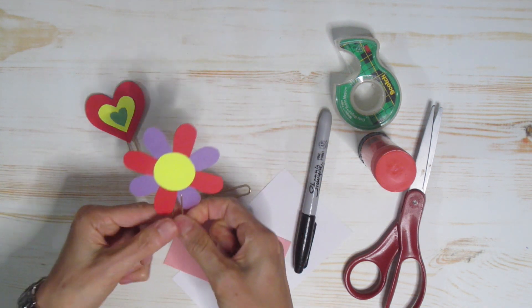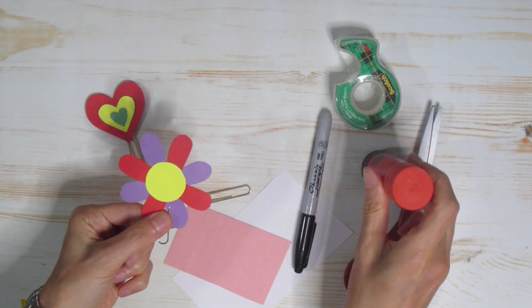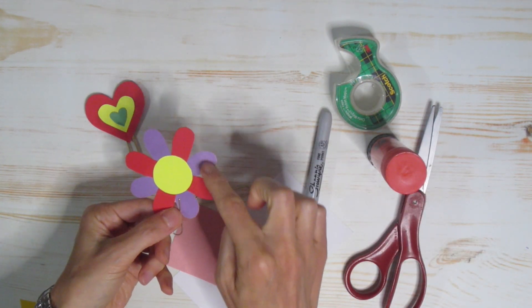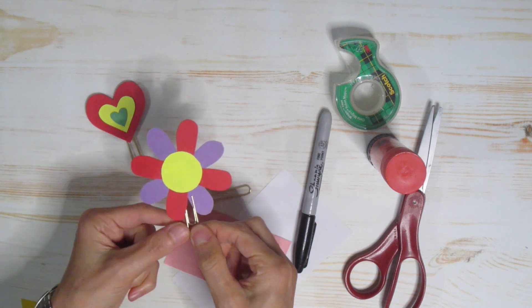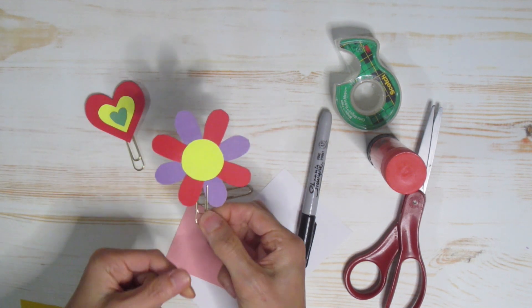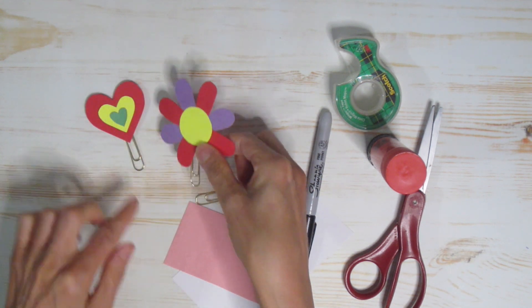Here all I did was take a circle. I actually used the lid for my glue to trace that circle. I made little petals in a little pattern, put those onto my paperclip, and there we go. We have another bookmark.